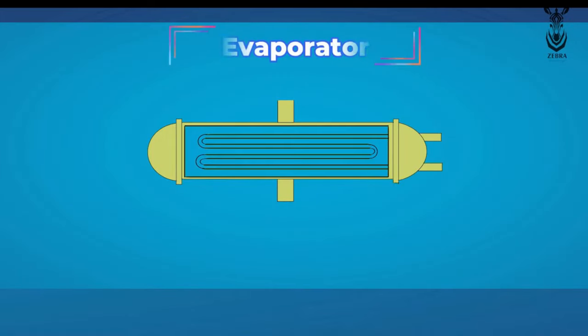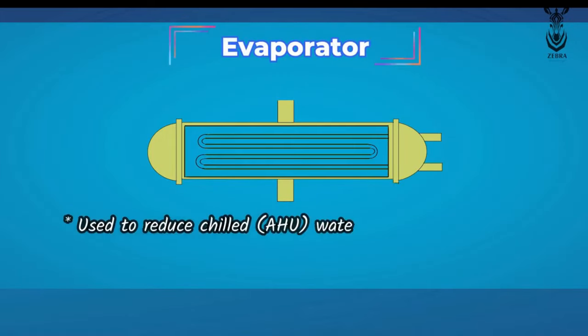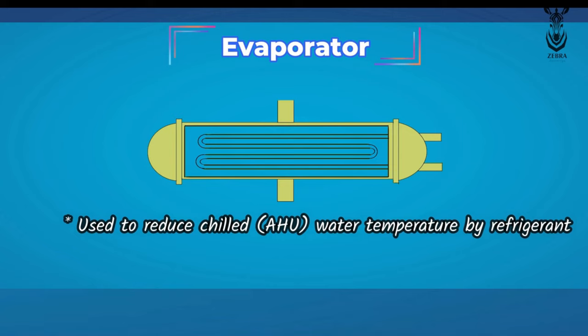The last component is the evaporator. The evaporator reduces the temperature of the water coming from the AHU with the help of refrigerant, and sends it back to the AHU.